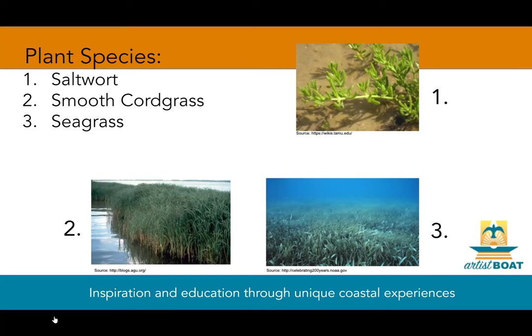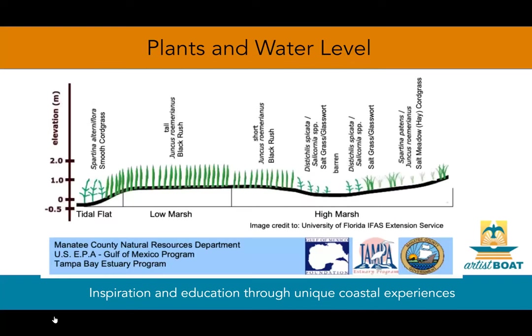Let's highlight a few common species. Number one, saltwort — it grows as a vine or small shrub with bright green curved leaves and a yellow or gray stem. Number two, smooth cordgrass is a tall grass that grows in clumps; its leaves are long and stiff and it is found in the low marsh closest to the water. Number three, seagrasses are flowering plants that grow under the water.